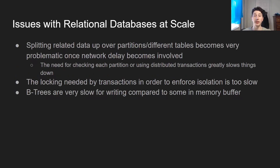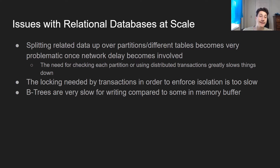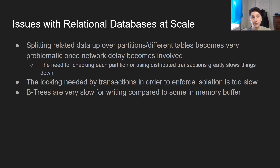Why is this problematic? The second sharding gets involved, all of this data splitting becomes super problematic. We have to make a bunch of network calls, both on reads to aggregate results from multiple partitions and on writes for distributed transactions. Additionally, having transactions even on a single node requires two-phase locking, which can be very slow because reads and writes can actually block one another. Finally, the B-trees that relational databases use are very slow for writing compared to some in-memory buffer like an LSM tree.